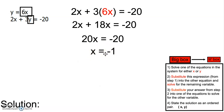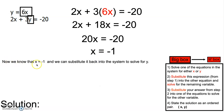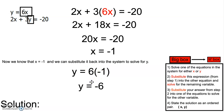Remember, our solution has to have both an x and a y, because it represents the ordered pair that's true for both equations. Now that we know x equals negative 1, we substitute it back into the system to solve for y. I'm going to substitute it back into y equals 6x, so y equals 6 times negative 1, and so y is negative 6. Our solution is (negative 1, negative 6).